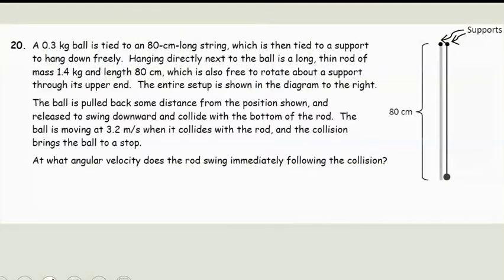So let's look at this next question. We have a 0.3 kilogram ball tied to an 80 centimeter long string, which is then tied to a support to hang down freely. Hanging directly next to the ball is a long thin rod of mass 1.4 kilograms and a length of 80 centimeters, which is free to rotate about a support through the upper end. The ball is pulled back and released to swing downward and collide with the bottom of the rod. The ball is moving 3.2 meters per second when it collides and the collision brings the ball to a stop. At what angular velocity does the rod swing immediately after the collision?